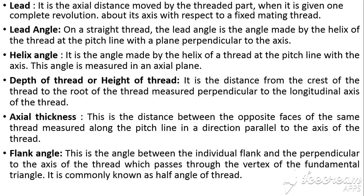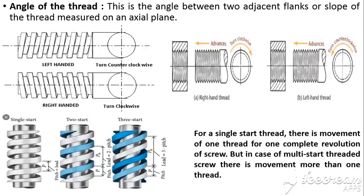This angle is measured in the axial plane. Depth or height of the thread is the distance from the crest of the thread to the root, measured perpendicular to the longitudinal axis. Axial thickness is the distance between the opposite faces of the same thread measured along the pitch line in a direction parallel to the axis. Flank angle is the angle between the individual flank and a perpendicular to the axis, passing through the vertex of the fundamental triangle — known as the half angle of the thread. The angle of the thread is the included angle between the two adjacent flanks measured on an axial plane.